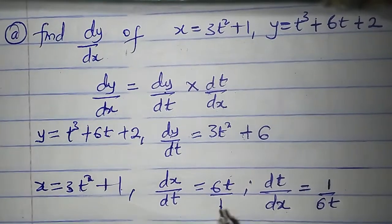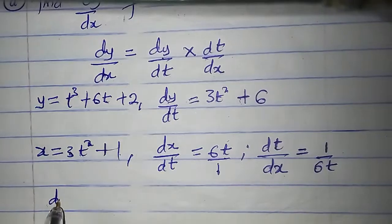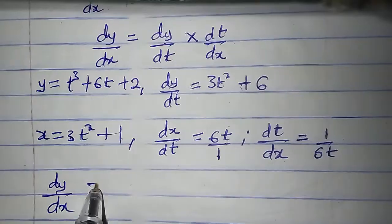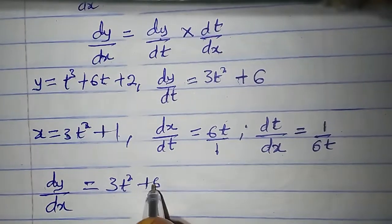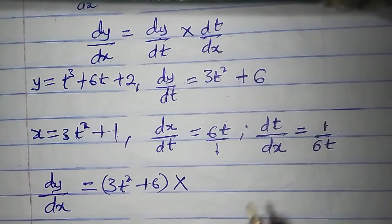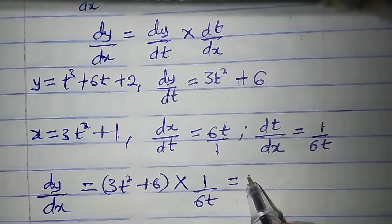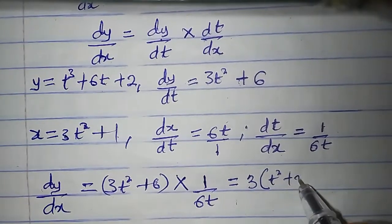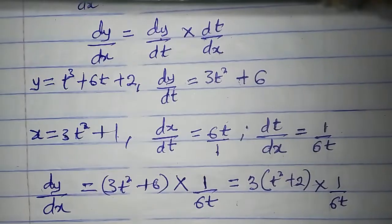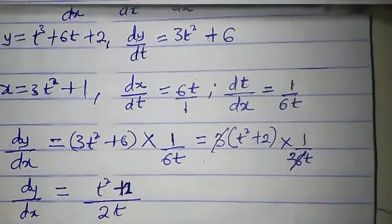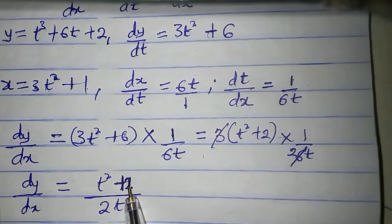dt/dx is equal to 1 all over 6t, since dx/dt is 6t over 1 and we reciprocate both sides. Therefore, dy/dx by the chain rule is dy/dt times dt/dx: that is 3t squared plus 6 times 1 over 6t. I can factor out 3 from the numerator to get 3 times (t squared plus 2), then times 1 over 6t. The 3 and 6 simplify, giving dy/dx equal to t squared plus 2 all over 2t.